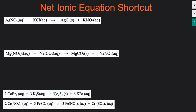In all the examples we're going to work through, the molecular equation has already been given. Now if you have to predict products — if you're only given the reactants — then you need to write the molecular equation first. If you're having trouble with that, I'll link a video in the description below to walk you through how to predict products. But assuming you know how to get to the molecular equation, we'll talk about how to use the shortcut to get to the net ionic reaction.